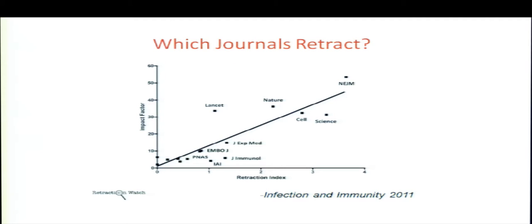Another paper by Fang and Casadevall plotted impact factor against a retraction index — retractions per thousand papers published — and found they're pretty tightly correlated. The New England Journal of Medicine, with the highest impact factor of any original research journal, also has the highest retraction rate. This likely reflects a screening effect: more people read high-impact journals, so errors are more likely to be found.